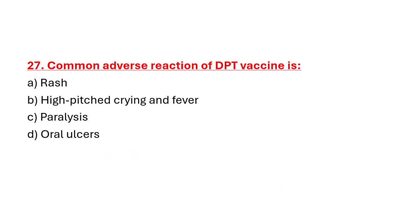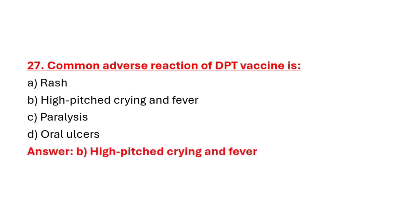Question 27: Common adverse reaction of DPT vaccine is. Option A: Rash. Option B: High pitched crying and fever. Option C: Paralysis. Option D: Oral ulcers. Correct answer is Option B: High pitched crying and fever.